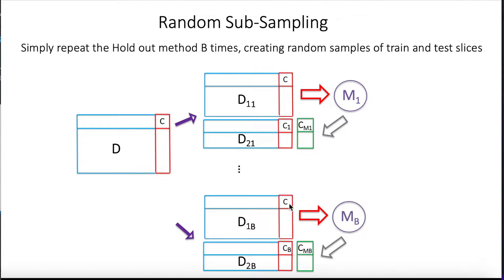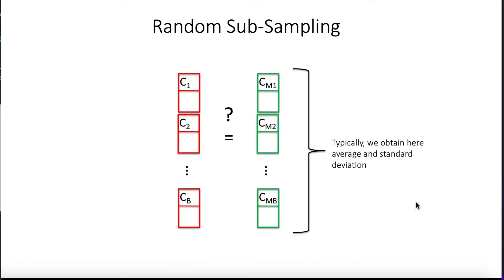And we repeat the same thing B times. So after that, we're going to get B sets of real versus predicted class, and then we typically average the results over all these B rounds. Very simple, right?